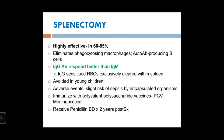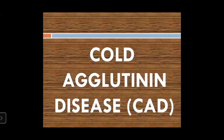Splenectomy is effective in about 60 to 85 percent of cases, with IgG antibodies responding better as they are cleared in the spleen. Now coming to the second type — cold agglutinin disease.